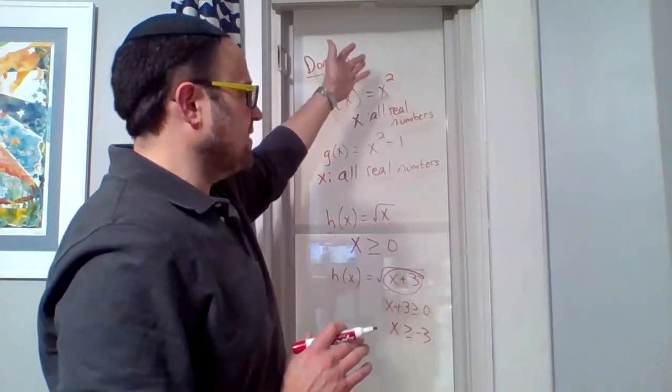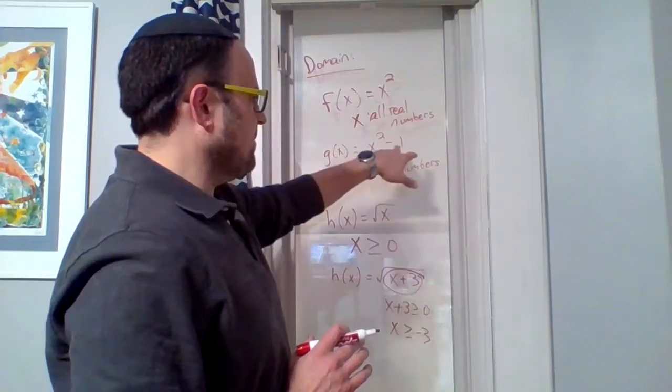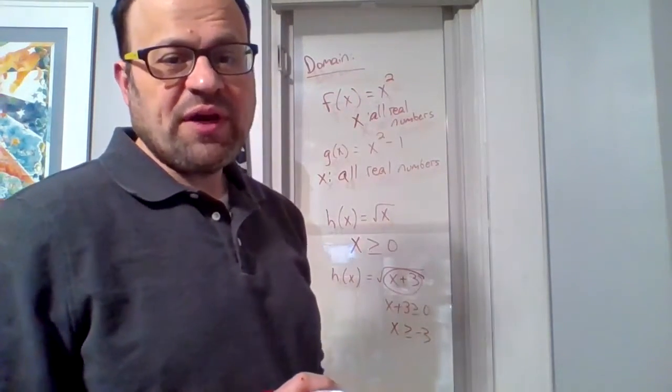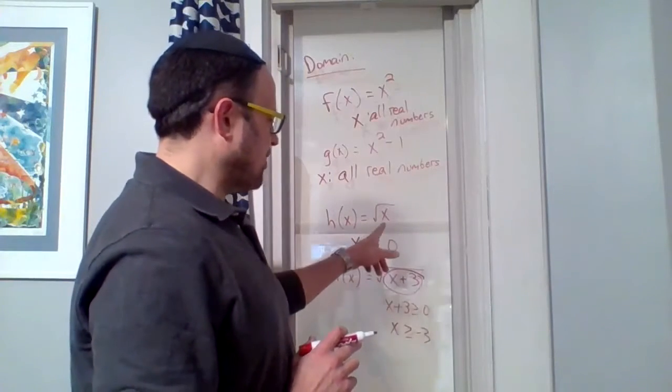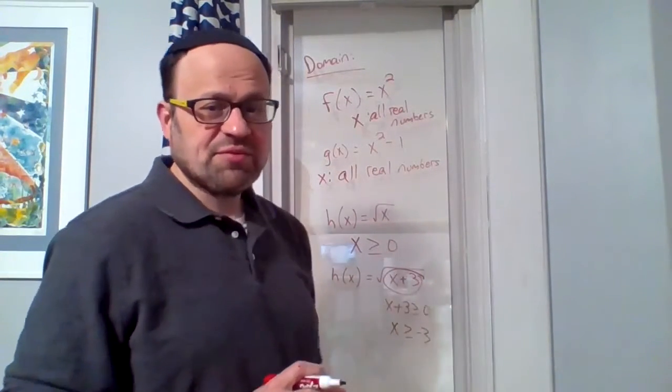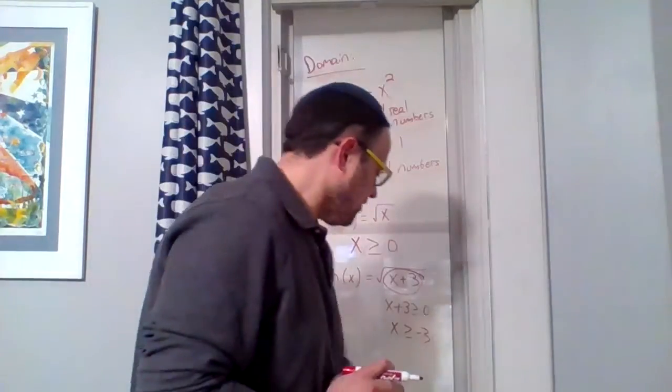Now, we started out with x squared, x could be anything. x squared minus one, x could be anything, but now when I have the square root of x, things change a little bit. And when I have the square root of x plus three, things change a little bit more.